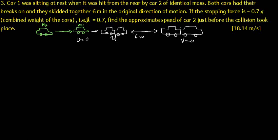Car 1 was sitting at rest when it was hit from the rear by car 2 of identical mass. Both cars had their brakes on and they skidded together 6 meters in the original direction of motion. The stopping force is 0.7 times the combined weight of the cars.